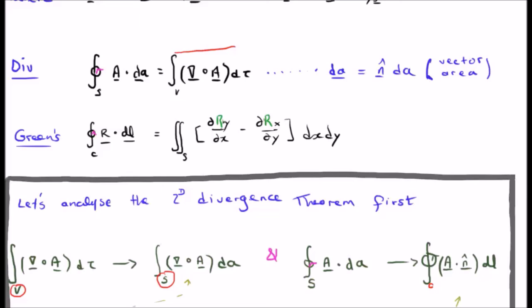Next if we look at the second component the volume integral of the divergence of A. This is on the bottom left of your screen.